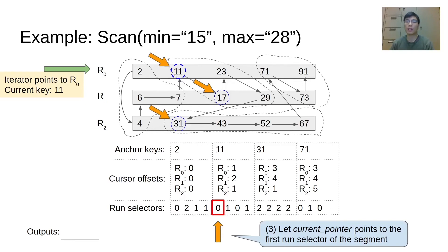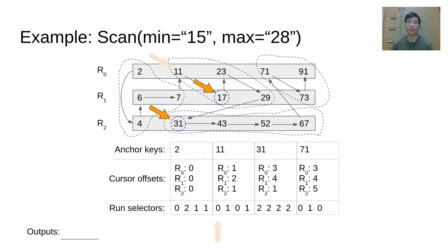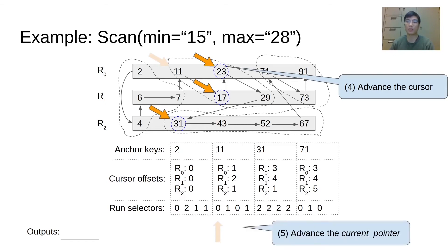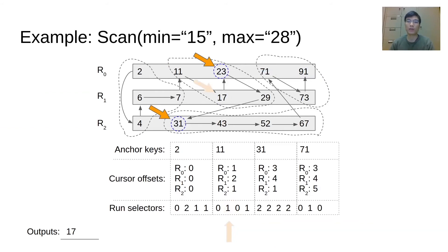Then, we compare the key under the cursor. Key 11 is smaller than key 15, so we need to advance the iterator to find the first key in the range. To advance the iterator, we first advance the cursor of the current run. In this case, the cursor of R0 will be advanced to point to key 23. Then, the current pointer will also be advanced to point to the next run selector in this segment. Then, the iterator will point to the key under the cursor of R1, which is key 17. 17 is greater than 15, so key 17 is copied to the user buffer.